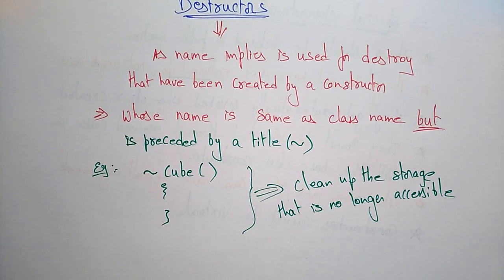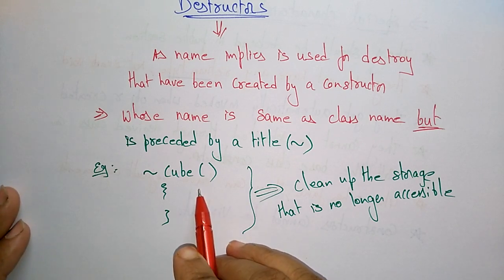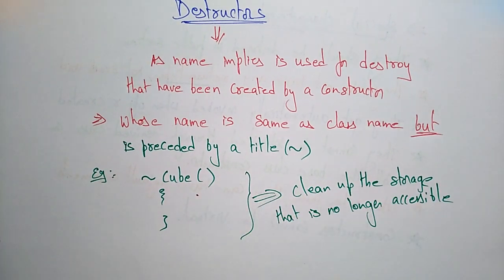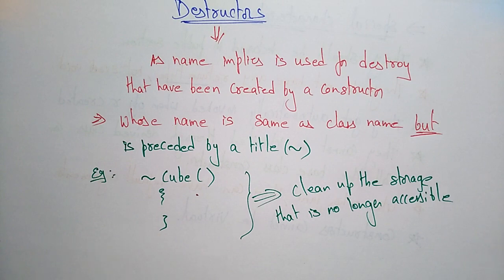It is better to follow: declare the destructor after the end of using any constructor. So after the construction end of any constructor, you just declare the destructor. Okay, so this is about the destructors. Thank you.